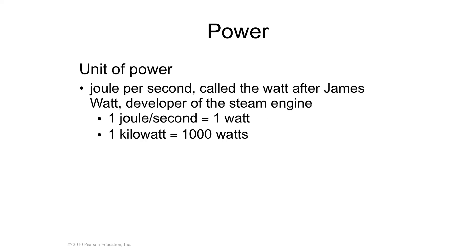A unit of power is a joule per second — a newton times a meter divided by a second — and that is a watt, named after James Watt. He developed the steam engine and was able to take heat energy and convert it into mechanical energy and then later into electrical energy. A kilowatt is how you buy your power from the power company — that's simply 1,000 watts. You have a kilowatt hour, and that's what you pay per kilowatt hour from the electric company in order to get the power to do what you need to do.